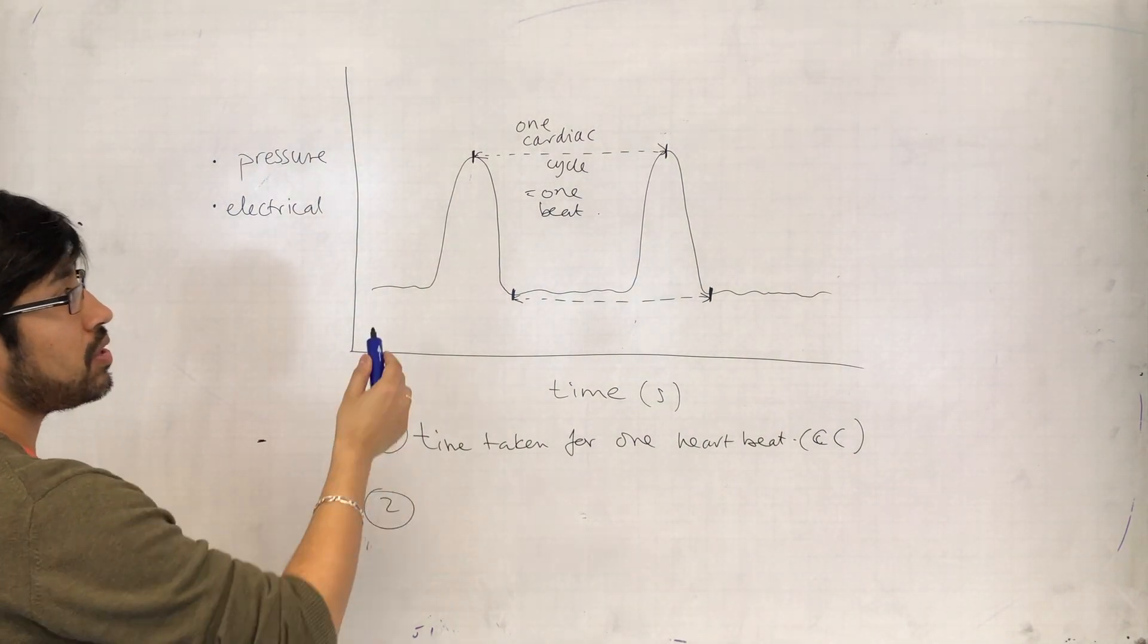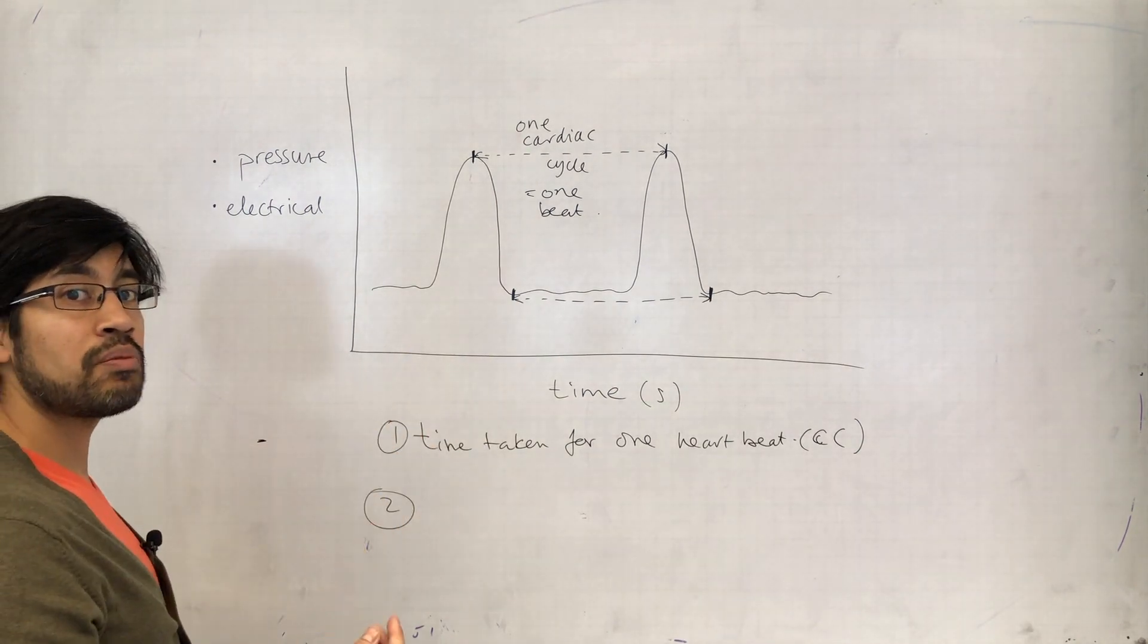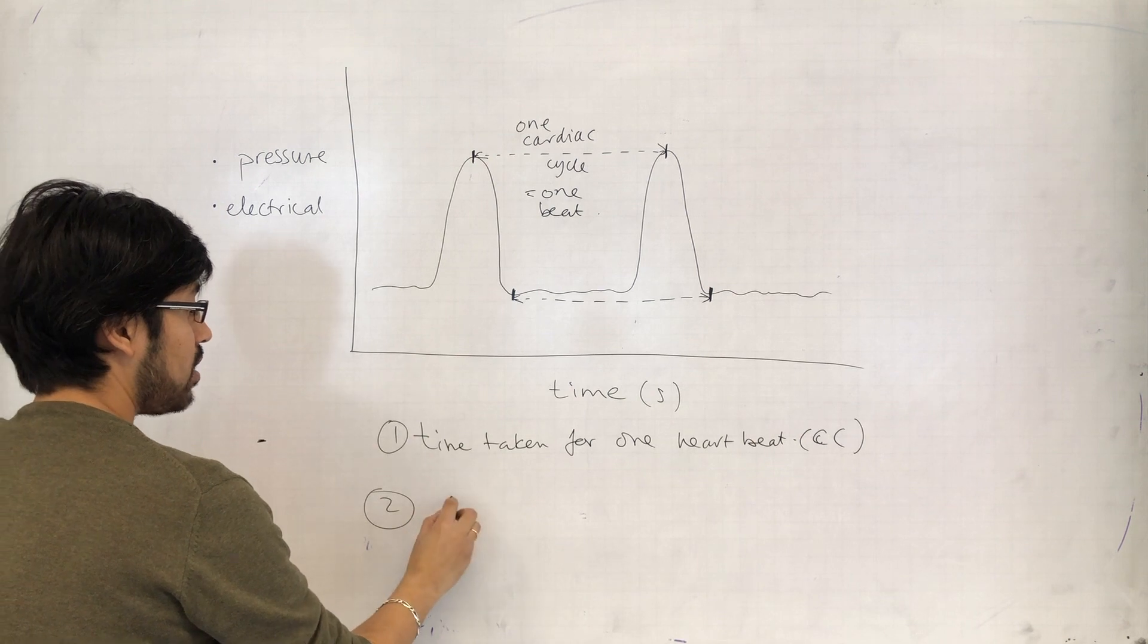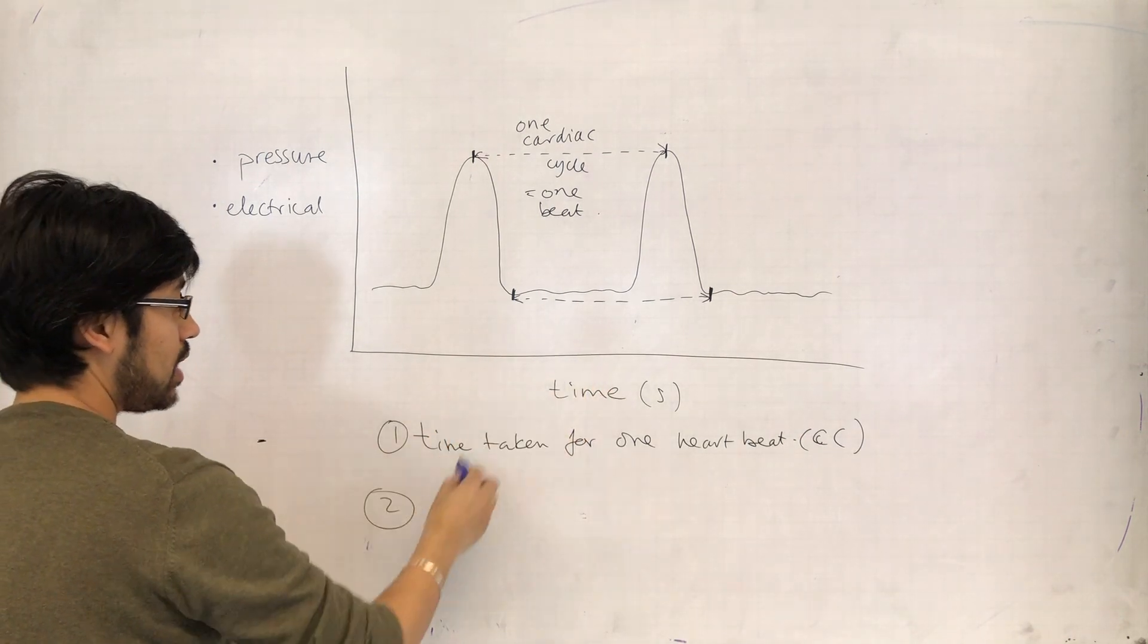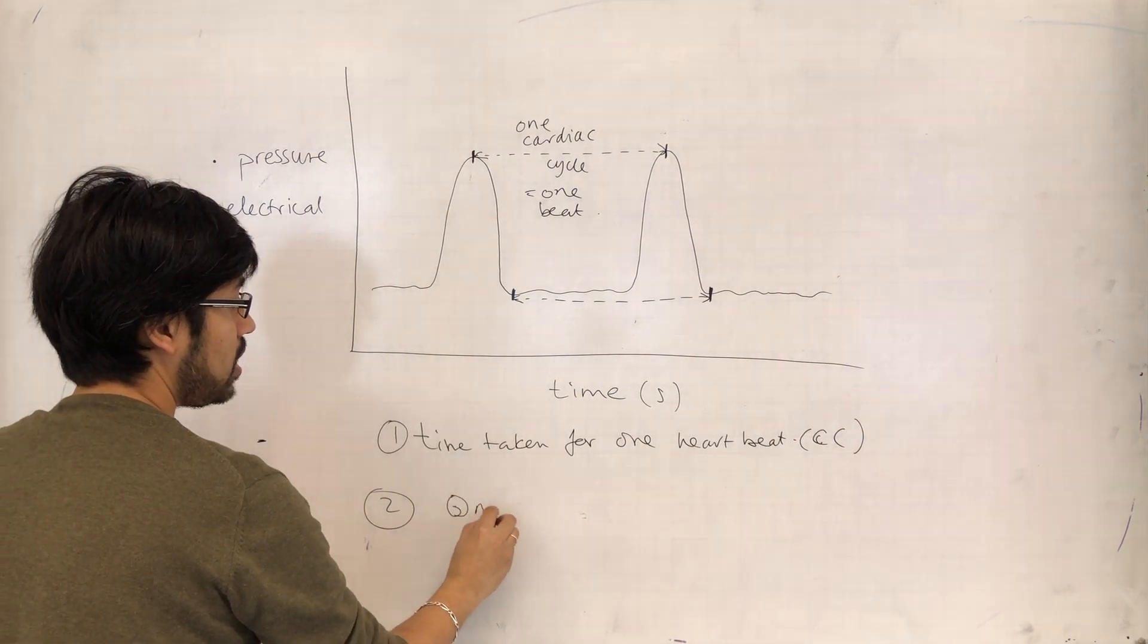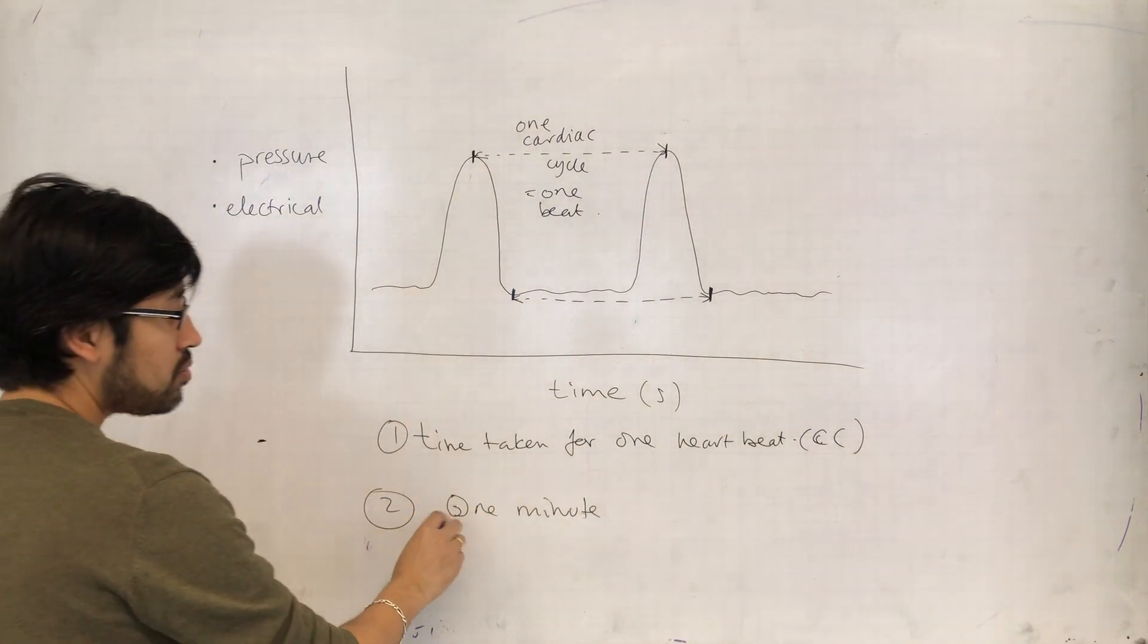...is work out how many beats will there be in one minute if that's how much time it takes for one beat. So what I do is I divide. If it's in seconds, I'll take one minute - I'm gonna keep it general here because I don't know what units you might have.